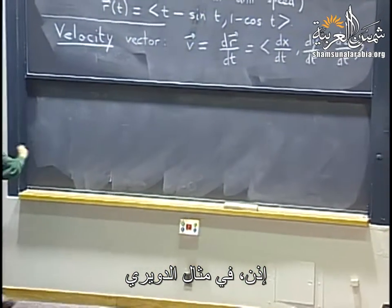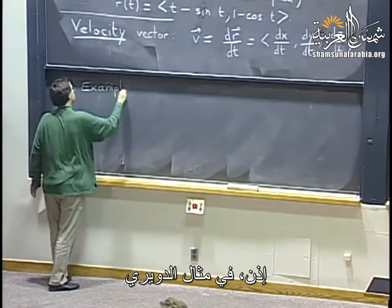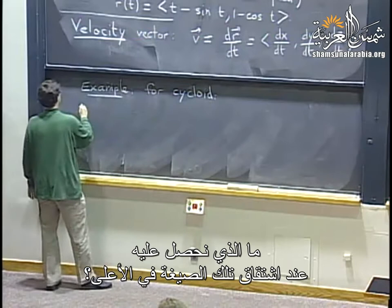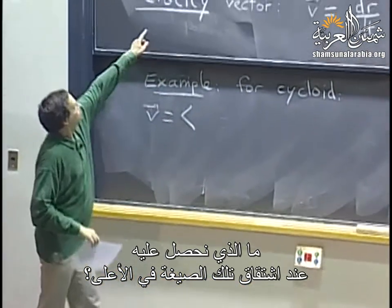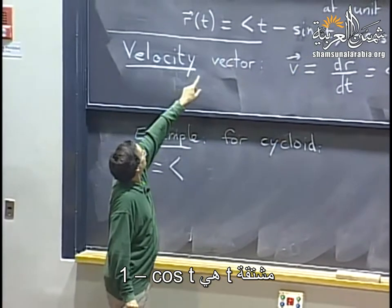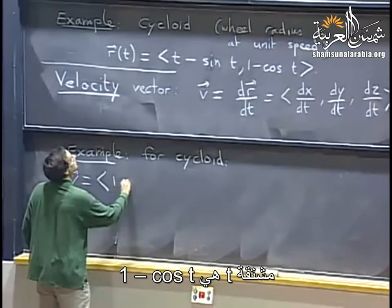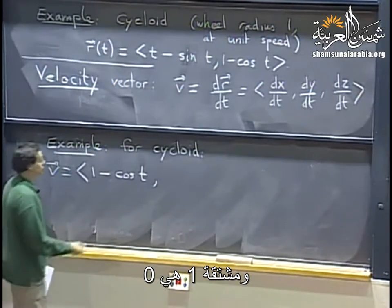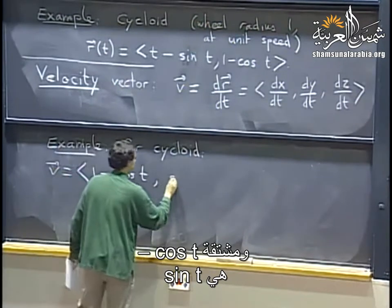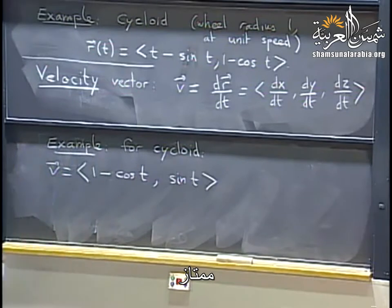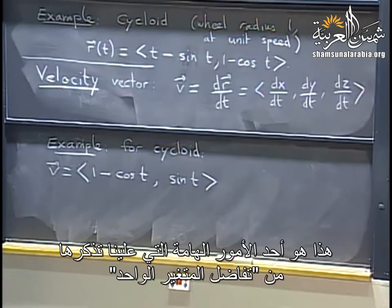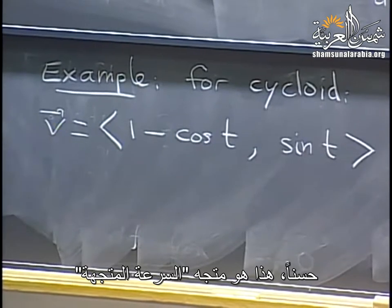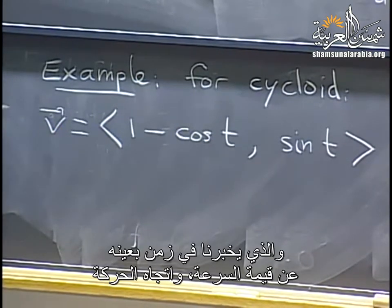Let's see what the velocity vector is for the cycloid. The derivative of t minus sine t gives 1 minus cosine t. The derivative of 1 minus cosine t: the derivative of 1 is 0, and the derivative of minus cosine t is sine t. So the velocity vector is (1 minus cosine t, sine t). That's at least one thing you should remember from single variable calculus. So that's the velocity vector — it tells us at any time how fast we are going and in what direction.